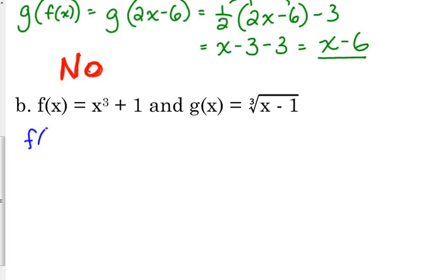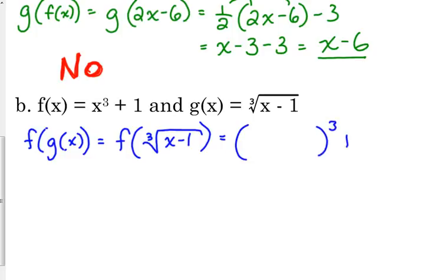So f of g of x. So g of x is the cube root of x minus 1. f is x cubed, so put a set of parentheses cubed, plus 1, plug in our expression. Okay. Now yes. The cube and the cube root are going to cancel.